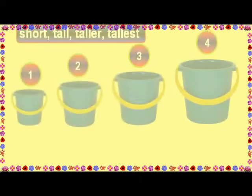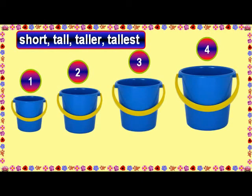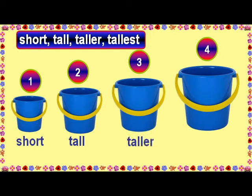Short. Tall. Taller. Tallest. The bucket number 1 is short. The bucket number 2 is tall. The bucket number 3 is taller than the bucket numbers 1 and 2. The bucket number 4 is the tallest of all the buckets.